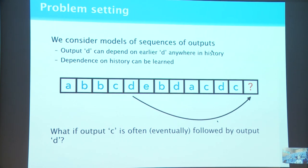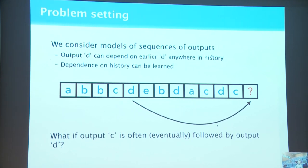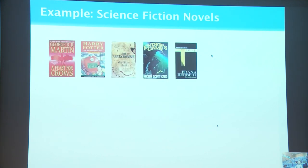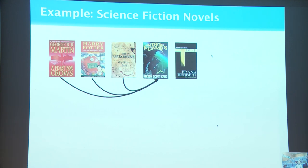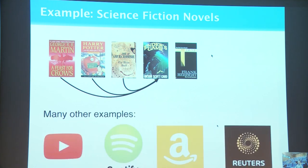We're interested in sequences of user actions or item consumptions, where the output of a particular time step can depend on what's happened earlier in the history. As an example, say we have a universe of science fiction novels we can recommend on a website like Amazon. We observe that people who read one book are likely to read Ender's Game, and so on. Given a sequence of consumptions, we'd like to know what the likely next element is, or more practically, what to recommend to this user.